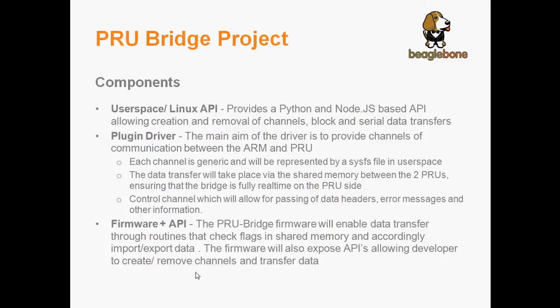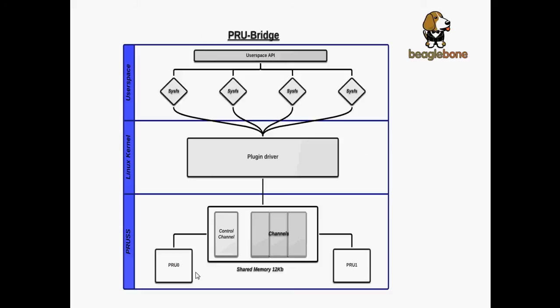Let's look in depth into the PRU Bridge project. It has three major components: the plugin driver, the firmware plus firmware APIs, and the user space APIs. The main aim of the plugin driver is to provide channels of communication between Linux and the PRU. Each channel will be completely generic and represented by a SysFS file in user space. As we can see in this diagram, we have the SysFS files in user space, the plugin driver in the Linux kernel, and the shared memory. We will be using the shared memory to transfer data between the PRU and the driver. Within the shared memory, each channel is represented in circular buffers, and there is a special channel known as the control channel, whose primary job is to pass data headers and error messages.